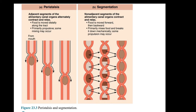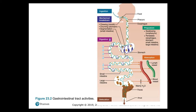This is summarized in figure 23.2, gastrointestinal tract activities. We start with ingestion of food and then mechanical breakdown: chewing in the mouth, churning in the stomach, segmentation in the small intestine. Propulsion is swallowing and peristalsis at the level of the esophagus, stomach, small intestine, and large intestine. Then there is digestion in the stomach and small intestine, absorption at the level of the small intestine and large intestine into blood and lymph vessels, and finally defecation — the elimination of feces.